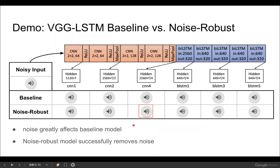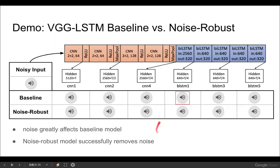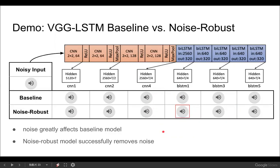The piano noise is severely suppressed in the noise-robust model, but not in the baseline model. In the noise-robust model, the piano noise almost disappears, but similarly not so in the baseline model.